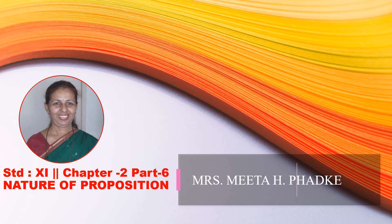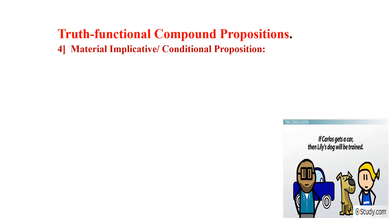Good afternoon. We will be doing here Part 6 of Chapter 2, nature of proposition. We will be doing the fourth type of truth functional compound proposition, that is, material implicative or conditional proposition. Let us take an example: if Carol gets a car, then Lily's dog will be trained. Here the truth functional connective is 'if...then.'